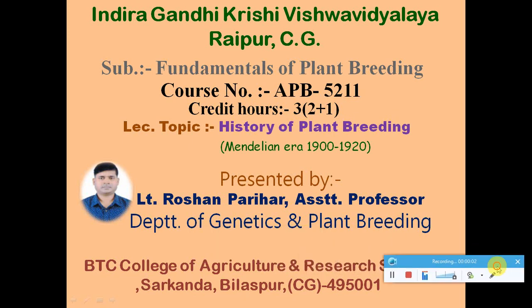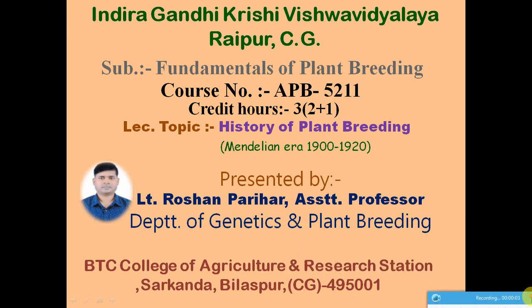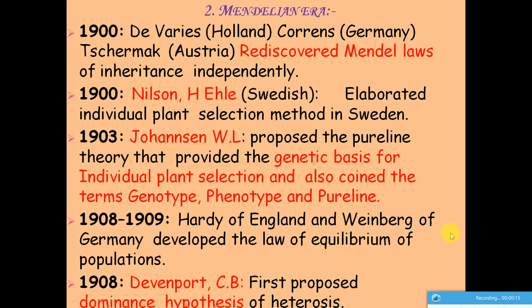Hello dear students. Today we will talk about the history of plant breeding, specifically the Mendelian era from 1900 to 1920. As per our previous lectures, we have already gone through the pre-Mendelian era. In this lecture, we will discuss the notable achievements of this period.